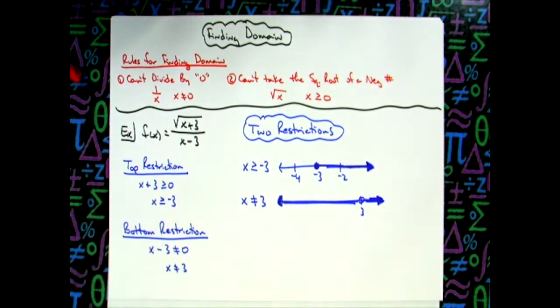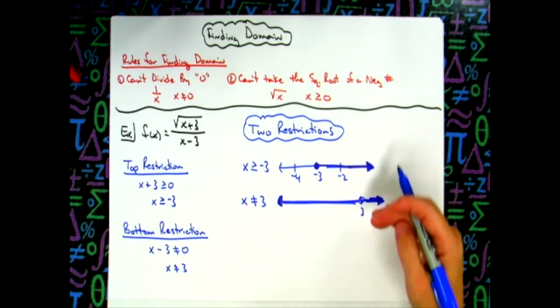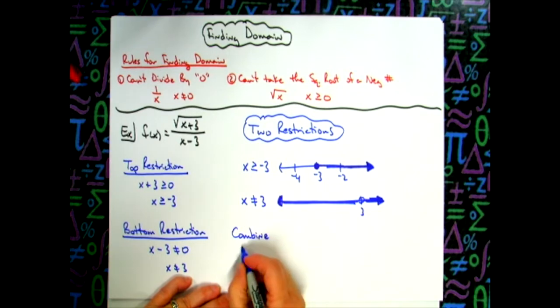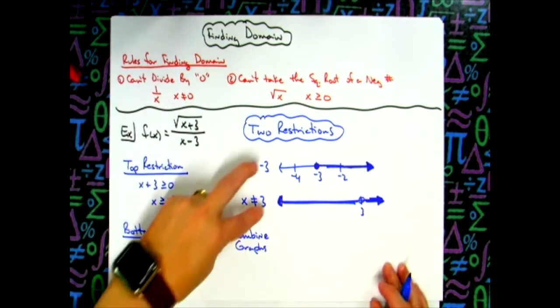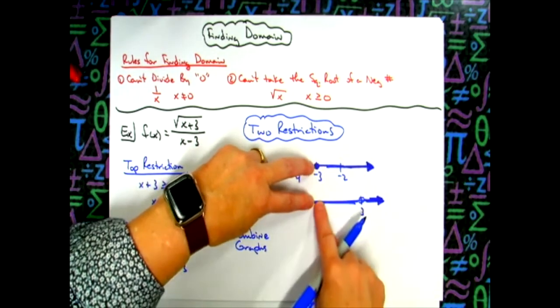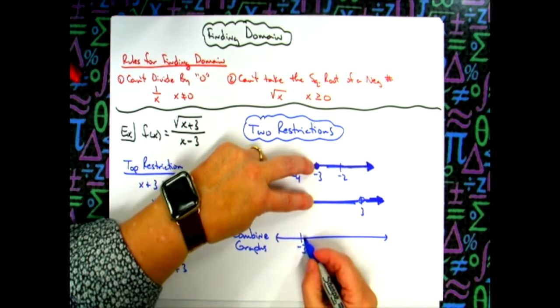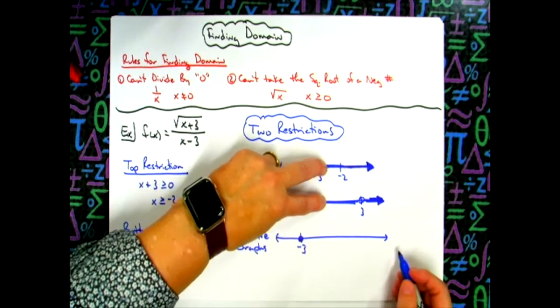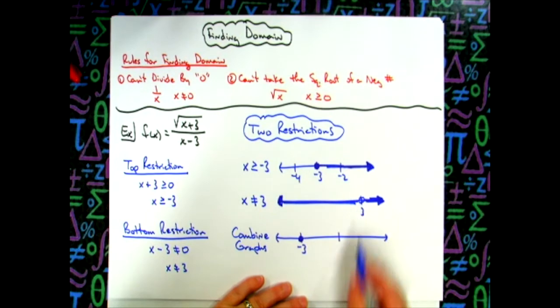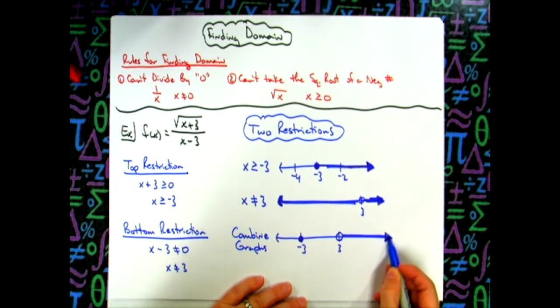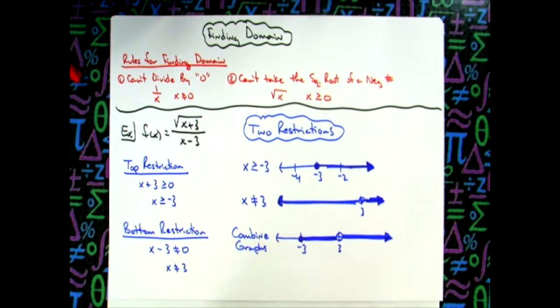Okay now what I need to do is I just need to overlap these number lines. I'm going to combine these two number lines and anything that is shaded on both the top and the bottom number line is going to be in my domain. So I'm going to combine the graphs. Nothing down here because it's only on one. Starting at negative three that's where my first value is that they have in common. So I'm going to shade in negative three. All the values are in common up until we get to three but when we get to three, three is shaded on this number line but not this one. So that means that has to be an open dot right there and then going past three all of them would be in common. So I combined both of those number lines into one.